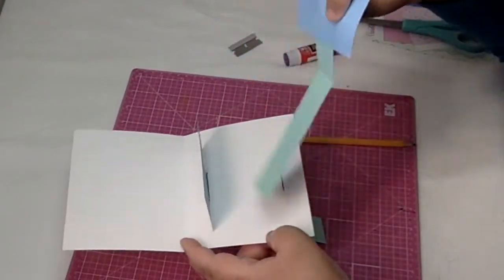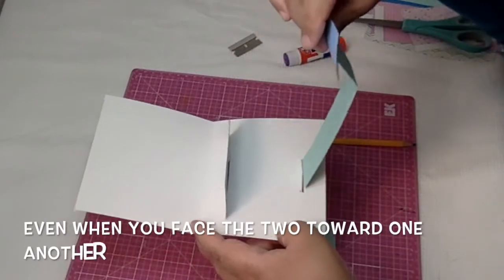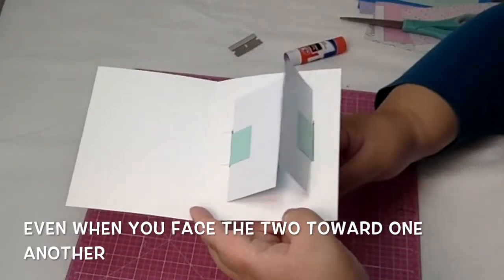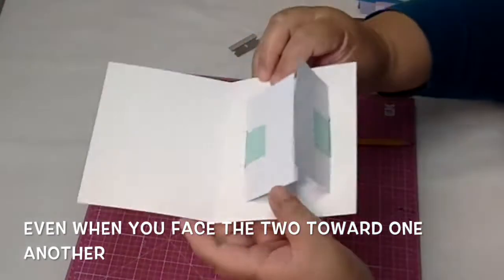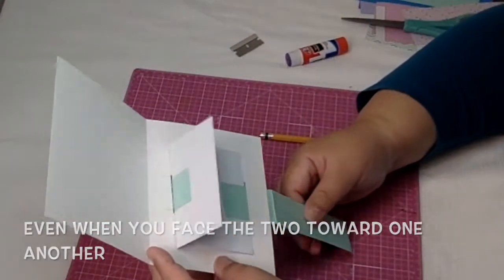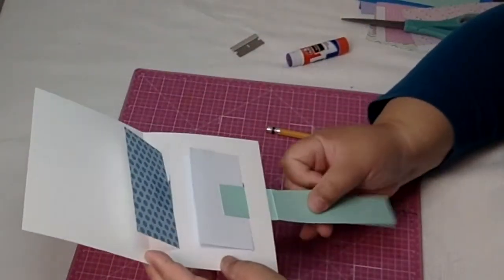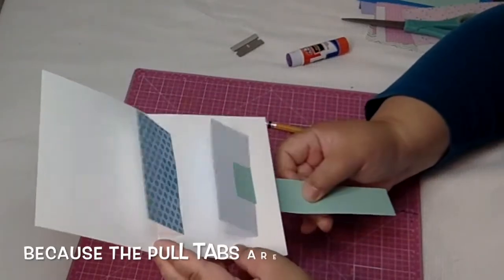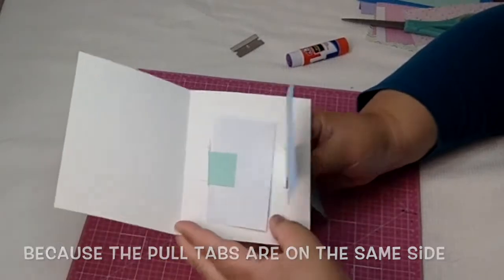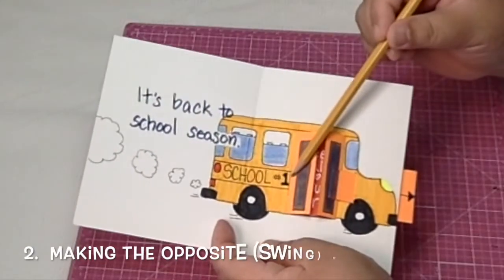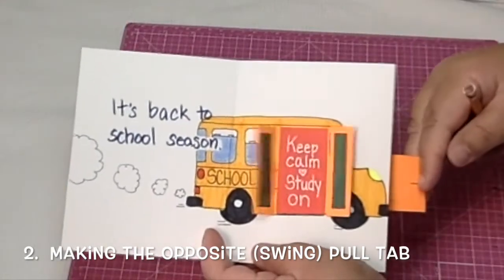So even if you take one of those and turn it around like this so that the folds will actually face each other underneath and the doors face each other, it doesn't matter because when you pull on those tabs on one side, the doors are still gonna swing in the same direction. It's because you're pulling from the same side and it's just made to swing in only one direction. So you need to make the opposite swing pull tab.